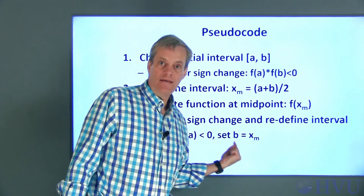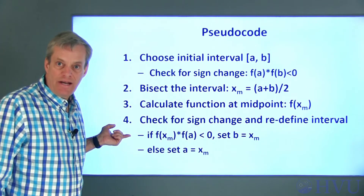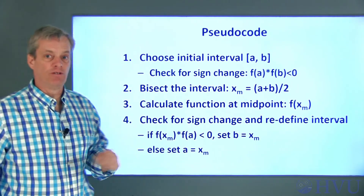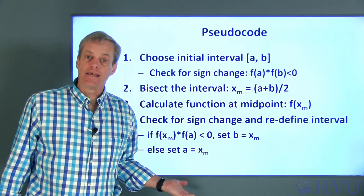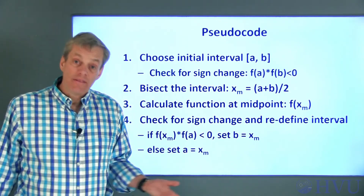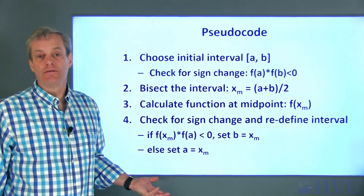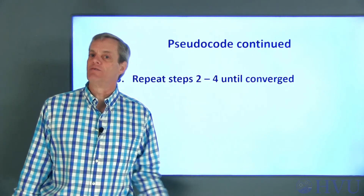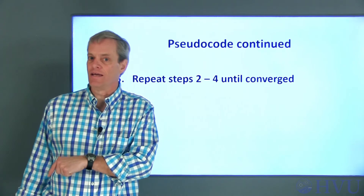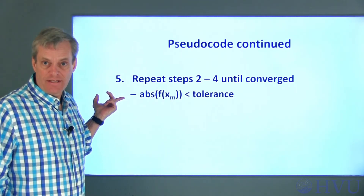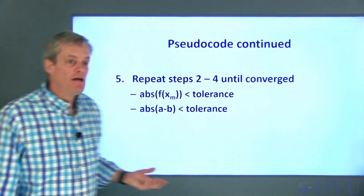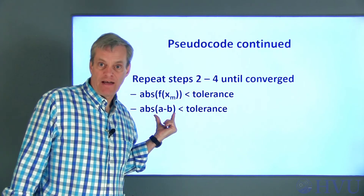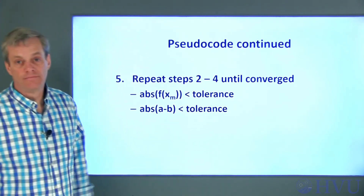If the sign change is between A and x_m, move the right side of the interval B to x_m. If the sign change is not between A and x_m, assume it is on the other side and move the left side A to x_m. One edge case: if the midpoint is exactly where the function is zero, the interval will no longer contain the zero crossing. To decide whether to stop, check if the function value at the midpoint is within some tolerance, or if the range of x values in the interval is within some tolerance.